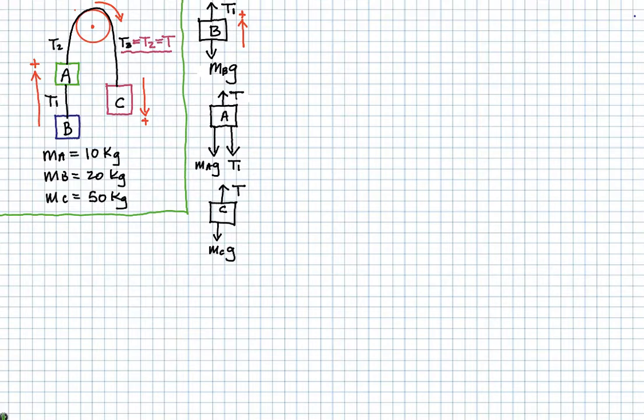The weight of object B is not pulling down on A. It's the string pulling it down. Now later you'll see that the string, the tension in the string happens to be equal to the weight of B. But it's a good practice to just stick to the contact force.